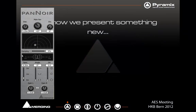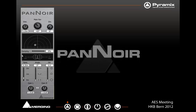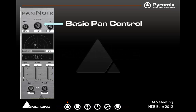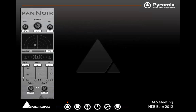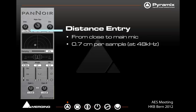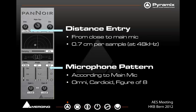Now we're presenting something new: the PANWAR time-coherent panner for Pyramix version 8. We've got the basic pan control available in degrees, which is quite nice. In fact, we can actually measure at the recording — we'd even be so precise as to really look at exactly where every instrument is placed. We also then have distance entry, so we can push the microphone out and away from the stereo pair. We can then choose the microphone pattern — whether it's cardioid, omni, or whatever it might be.